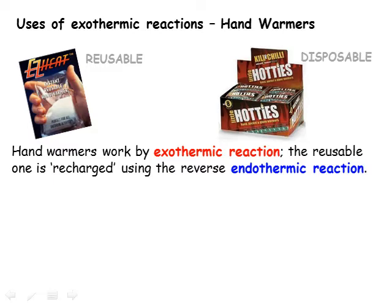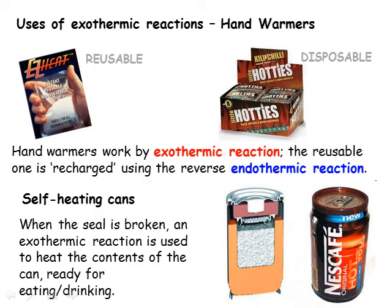Exothermic reactions are widely used in everyday life — for example, whenever we use fuel to generate heat. Hand warmers are another good example, and come in rechargeable and disposable types. You can also get food in self-heating cans, which is useful for outdoor activities such as hiking when it might be difficult to cook. Inside the can, an exothermic reaction is used to heat the compartment where the food is, bringing it up to the right temperature to eat.